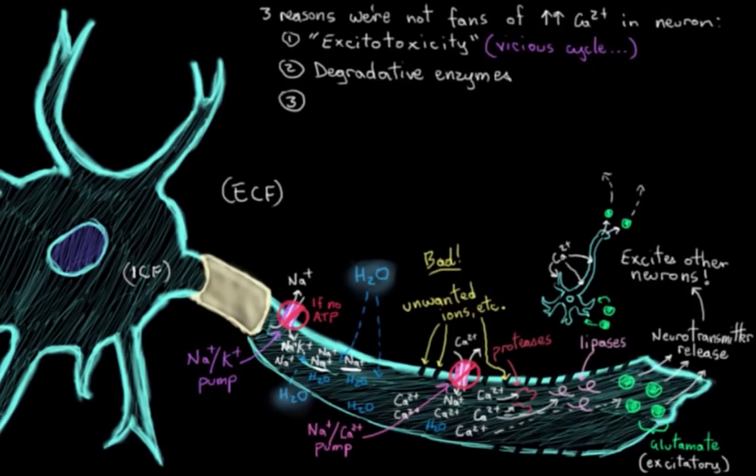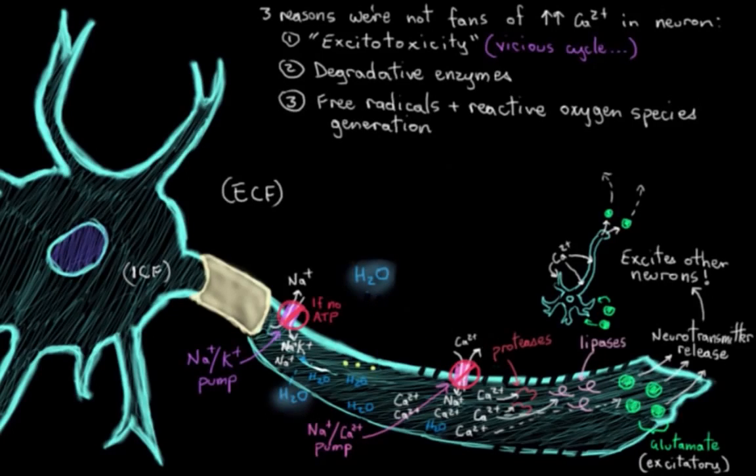And the third reason we don't want too much calcium is that too much calcium causes free radicals and reactive oxygen species to be generated. So these are little harmful chemicals that lead to further neuron damage, particularly of the cell membrane.